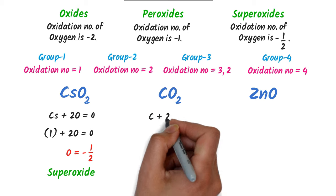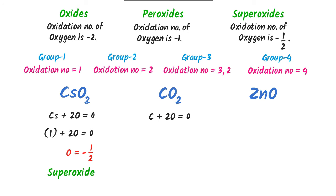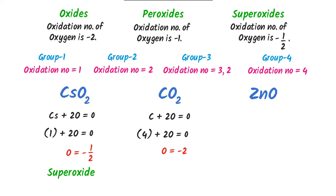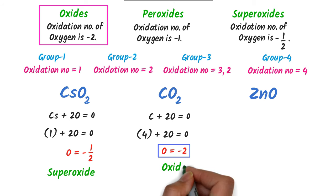Secondly, for CO₂, I write: carbon + 2(oxygen) = 0. The oxidation state of carbon is +4, so 4 + 2(oxygen) = 0, and oxygen = −2. The oxidation state of oxygen is −2, so this compound is oxide.